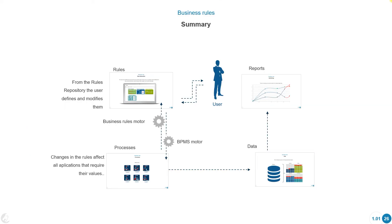Here we can see a summary of how business rules are used. There are different types of business rules in the application. Most BPMS have something called process rules — a decision-making mechanism within a process that only affects that process. For example, many BPMS tools have gateways that allow you to move the flow in one direction or another based on some decision or data input in that process. This is what we call a process rule.